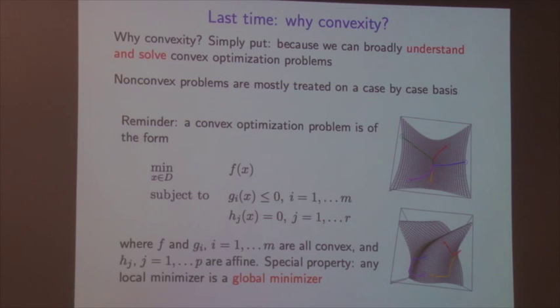A very special property we proved last time: for any convex problem, any local minimizer is automatically a global minimizer. If we're at a point where we can't go downhill any further, we know we're done. This is a key fact about convex optimization.